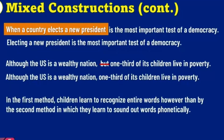Let's look at one more. 'In the first method, children learn to recognize entire words. However, then by the second method in which they learn to sound out words phonetically.' This happens a lot in the writing of students who are losing control. It also happens when students are trying to put together two separate sentences into one, but they don't know how. They end up using phrases like 'then by' — an adverb phrase — and 'in which' — a prepositional phrase. It's like they're really trying hard to do sentence combining, but they don't have the tools.